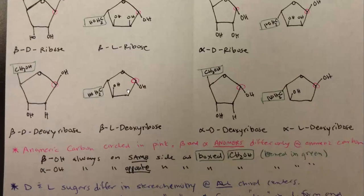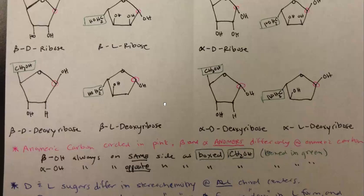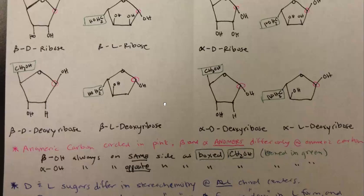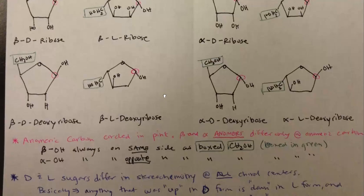Notice with the deoxyribose here, I didn't actually draw the hydrogen. So if a carbon doesn't have those lines drawn for the hydrogens, it's just implied that the hydrogens are there.